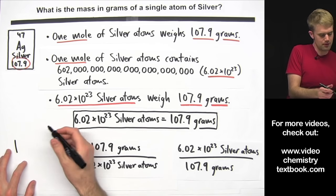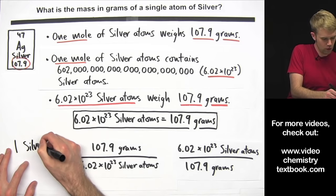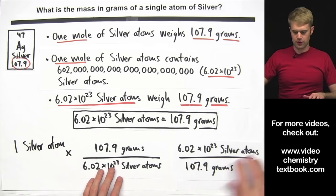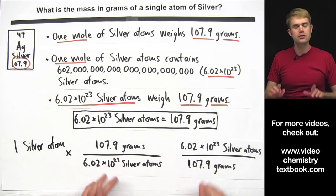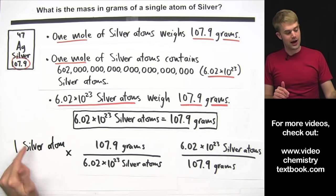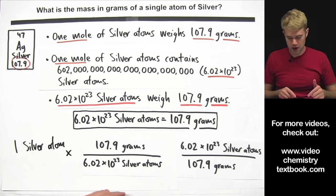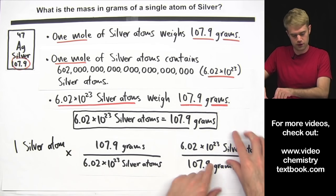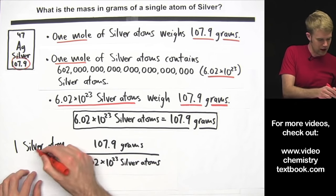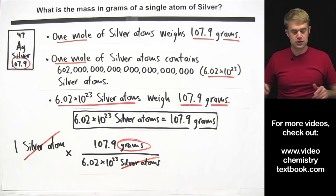We're going to do a conversion factor problem where we start with one silver atom and multiply by one of the two conversion factors. The one we're going to choose is the one that will cancel out silver atoms. Since silver atoms is on the top on our starting quantity, we're going to want it on the bottom of the conversion factor. This conversion factor has silver atoms on the bottom, so silver atoms cancels out, leaving us with grams.